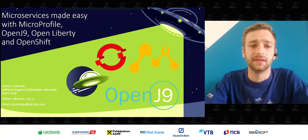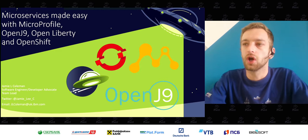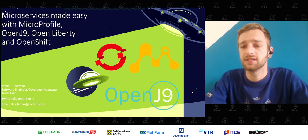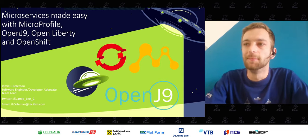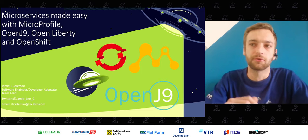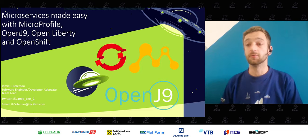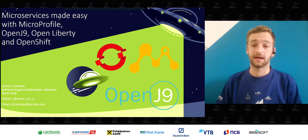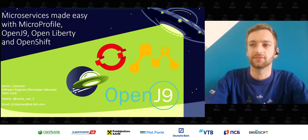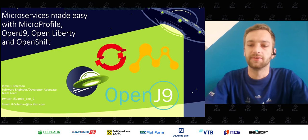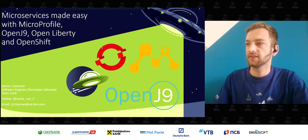Hello everybody, good morning, evening, or afternoon depending on where you are. Today I'm going to talk about open source technology, as you can probably tell by the title of my presentation. It's called 'Microservices Made Easy with MicroProfile, Open J9, Open Liberty, and OpenShift.' I'm Jamie Coleman, a software engineer and developer advocate for IBM. I generally talk about microservice architecture, and today I want to expand on some of these technologies and why I think they're important.